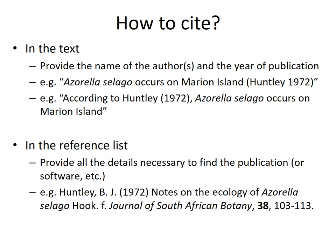The reference list provides all the details necessary to find the publication, software, or book where you got your information. The standard format for South African Journal of Botany would be: surname and initials of authors, then the year — pay attention, some journals put the year in brackets, some put it between commas — then the title of the article, the journal it was published in, the volume number, and the page numbers. South African Journal of Botany will italicise the journal name and put the volume in bold. These fine details can seem really unnecessary, but part of it is: if you don't show attention to detail here, how does your reader know you've shown attention to detail when collecting and analysing your data? So consider it a test of your meticulousness.